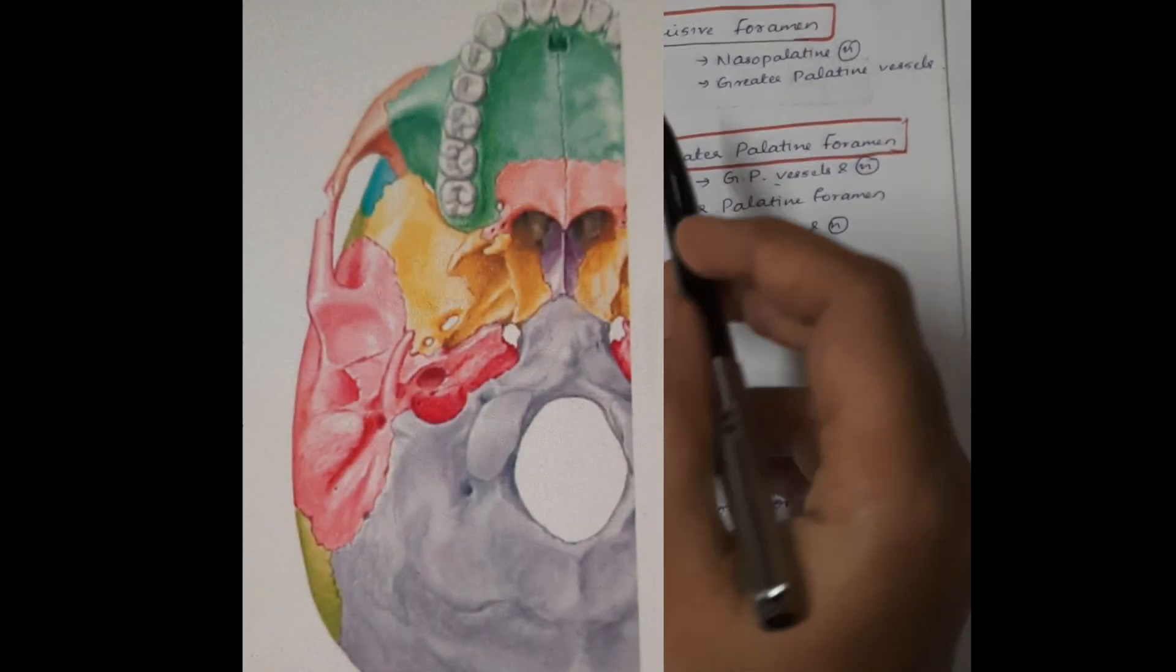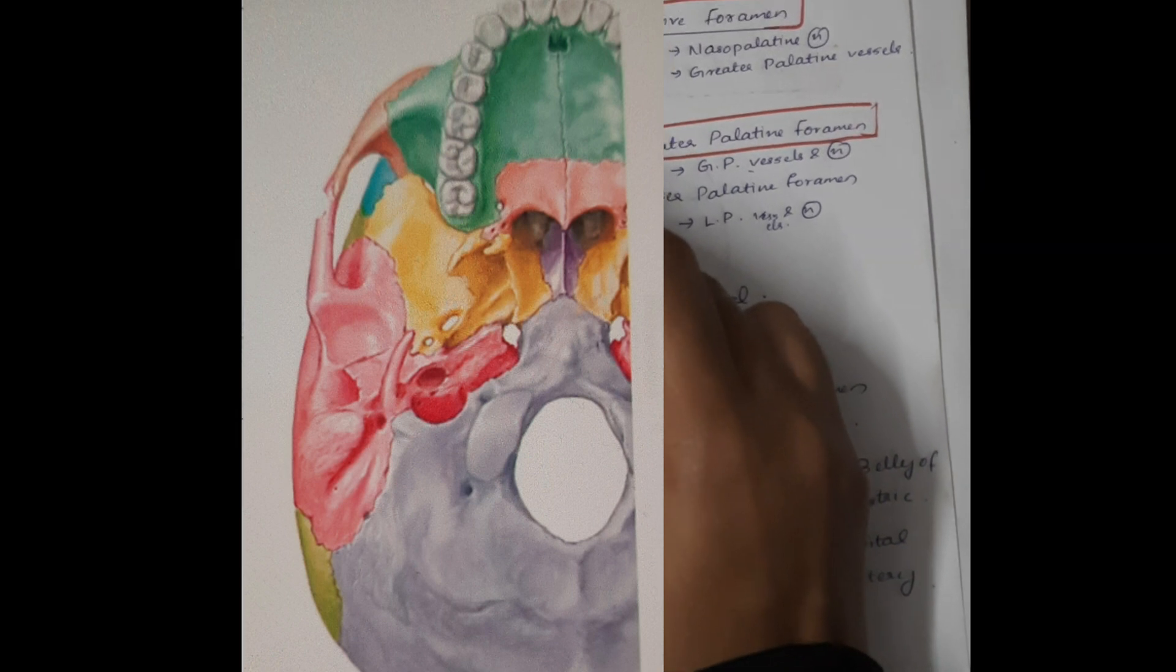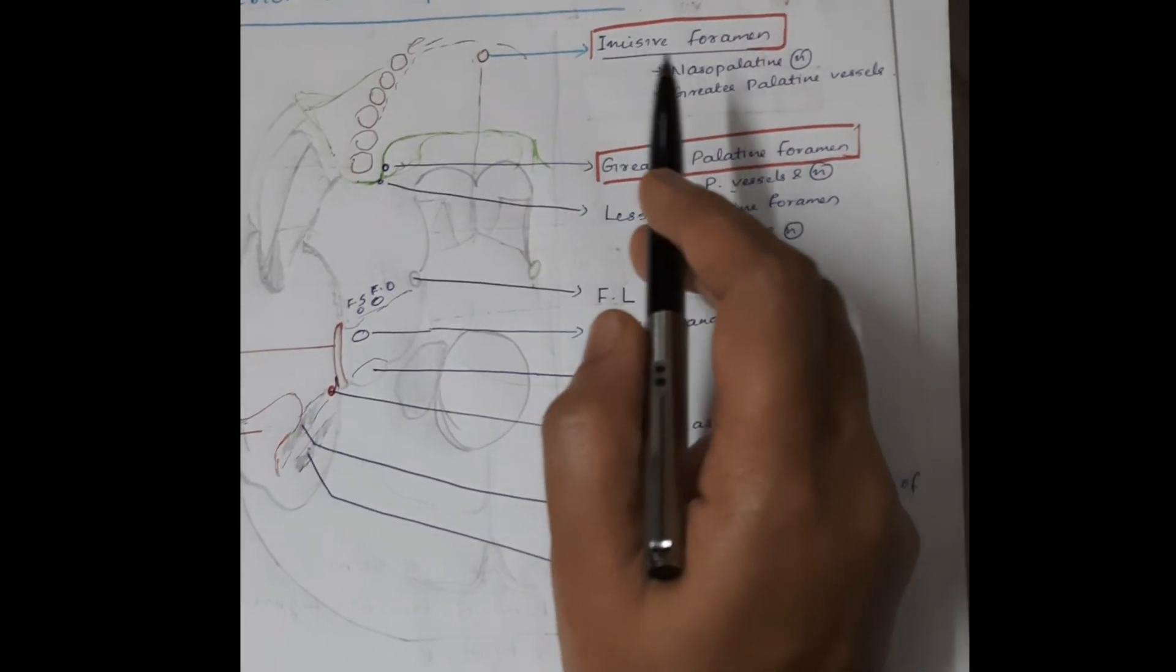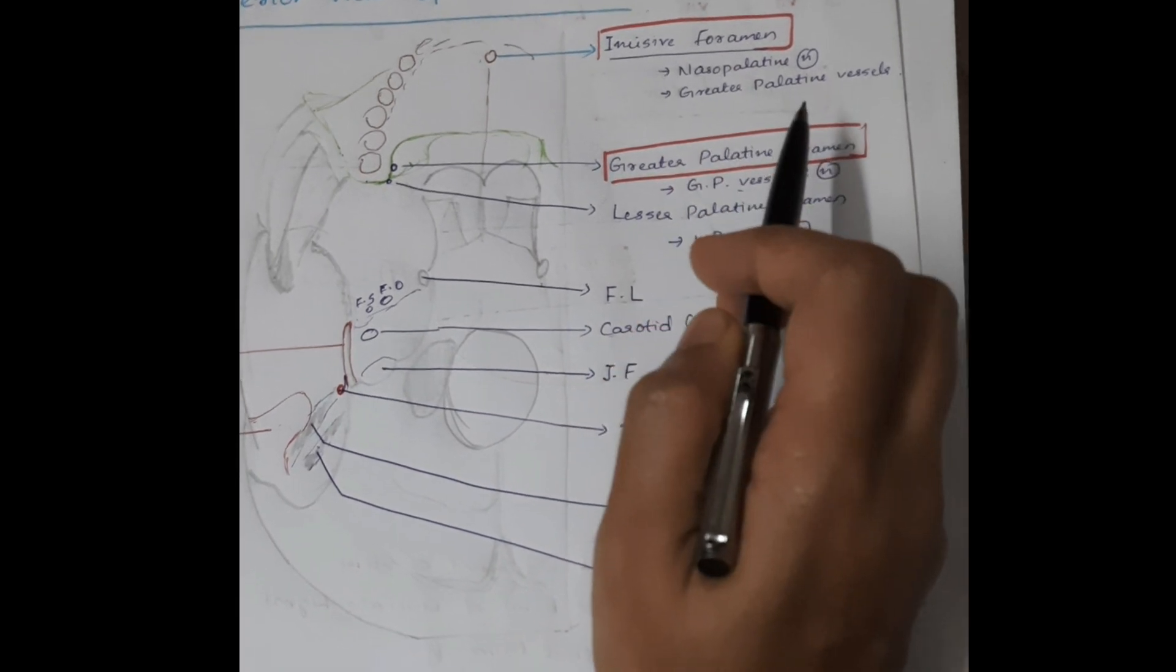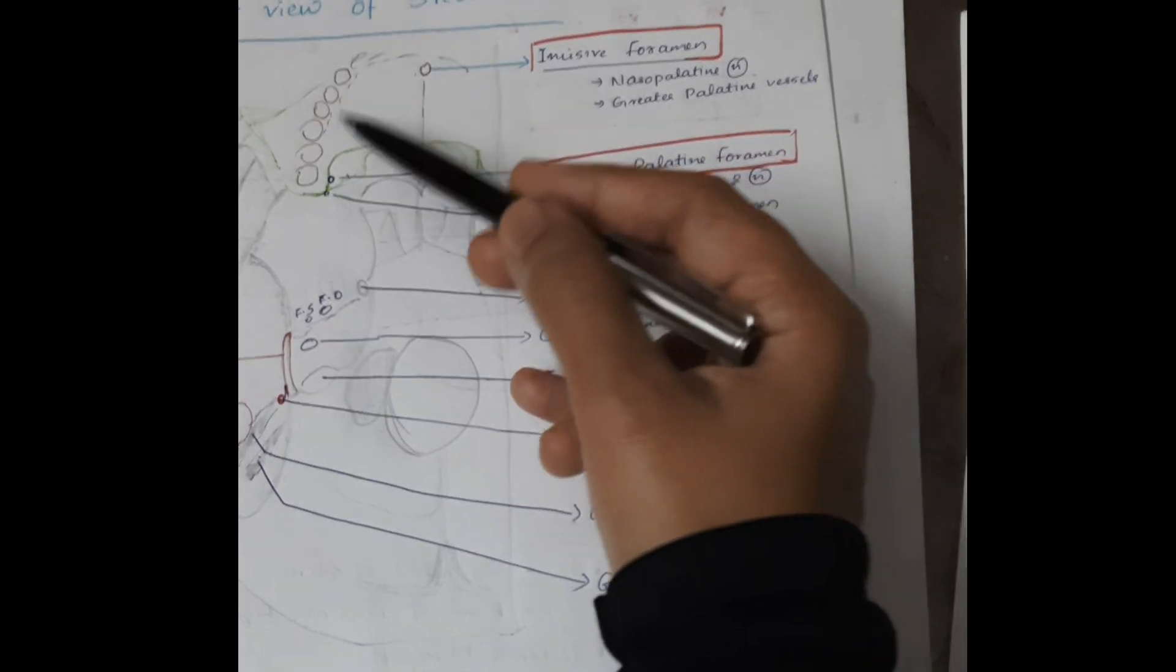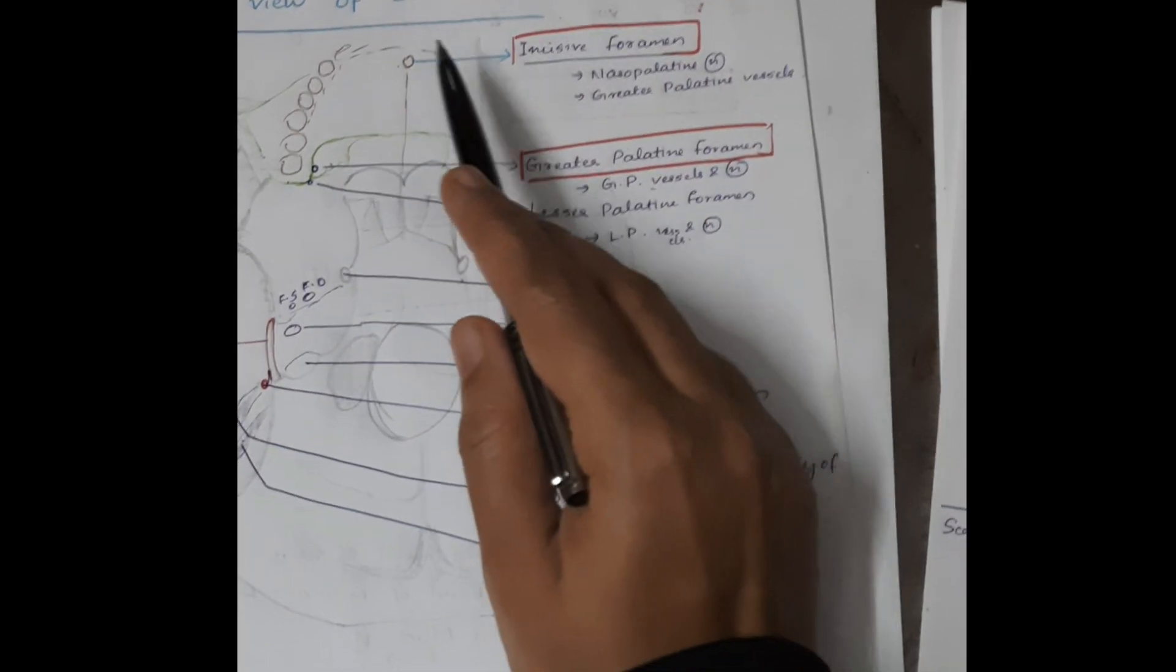First of all we can see the incisive foramen. The structures passing through are the nasopalatine nerve and the greater palatine vessels. This is the tooth which is present, this is the palate. Incisive foramen - nasopalatine nerve and greater palatine vessels pass through.